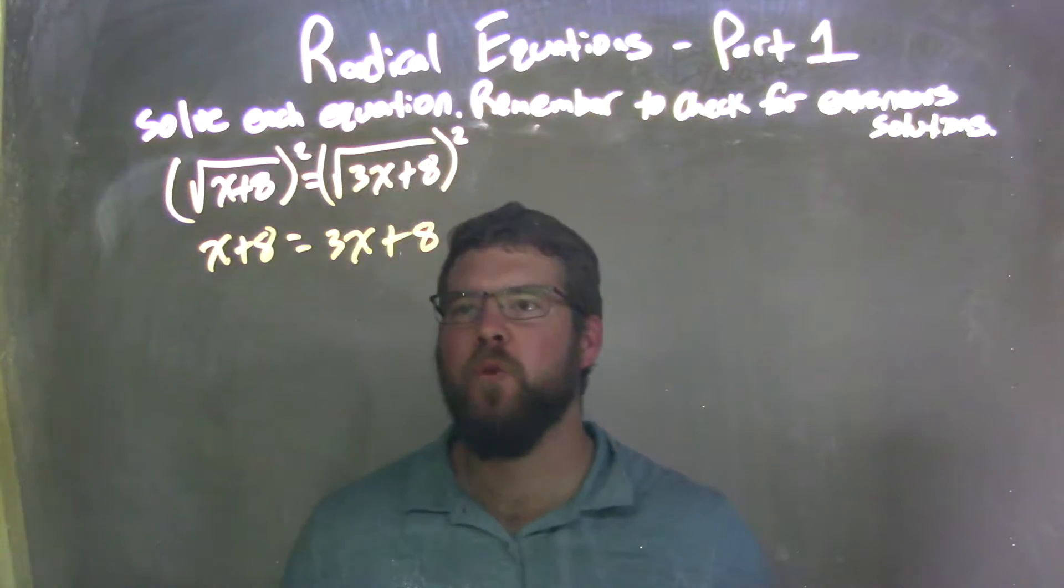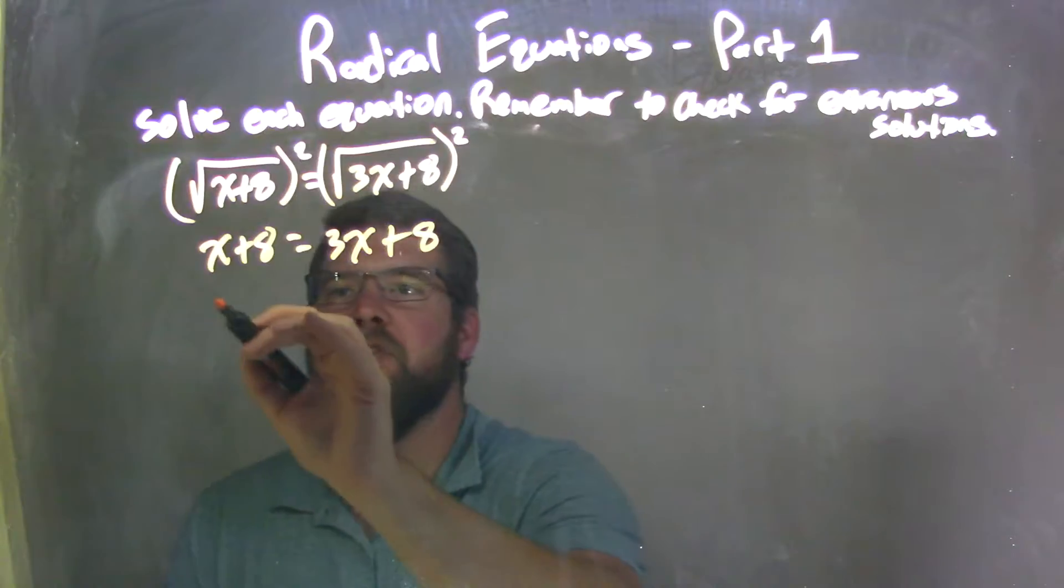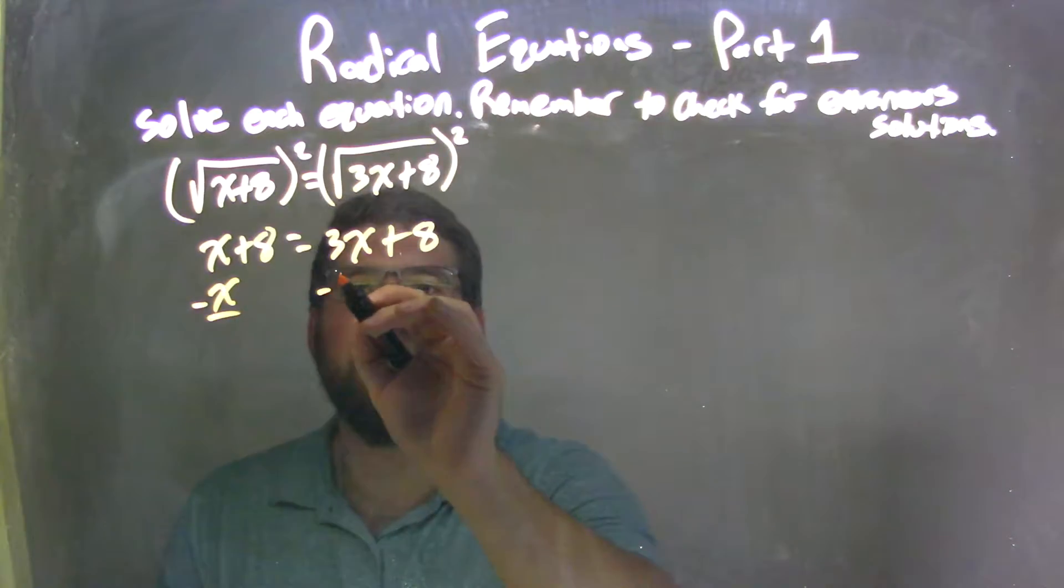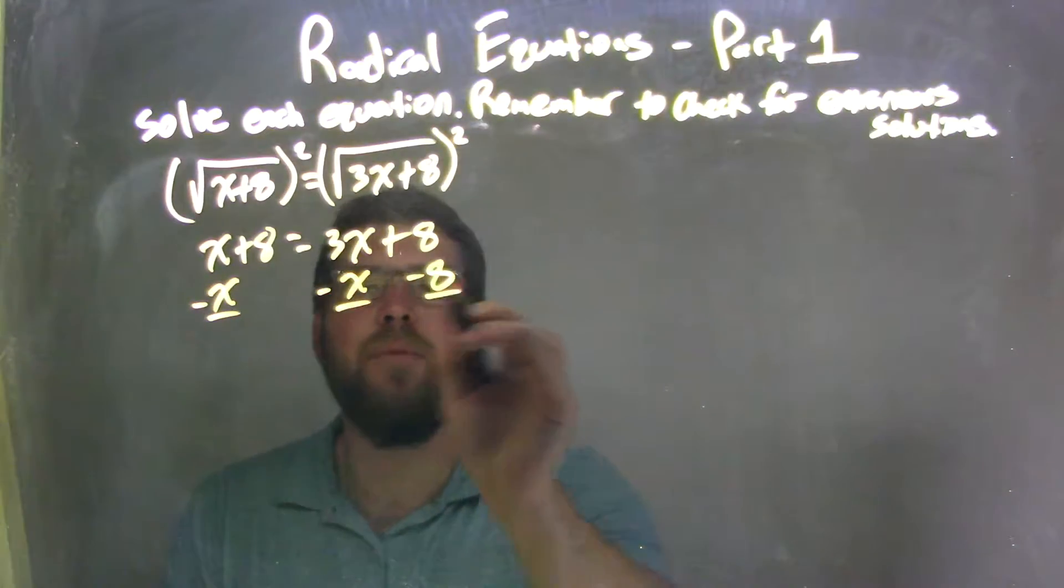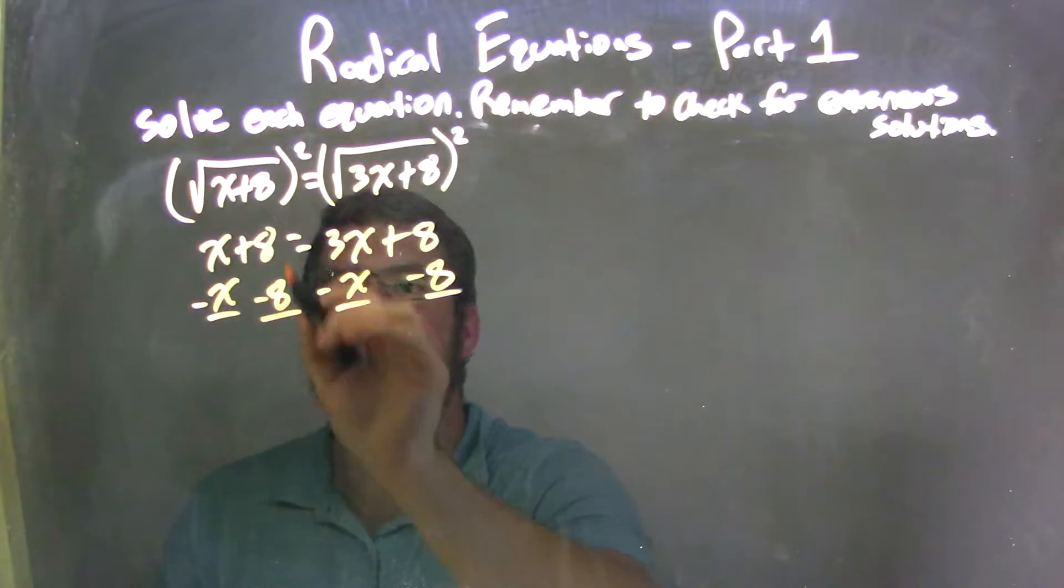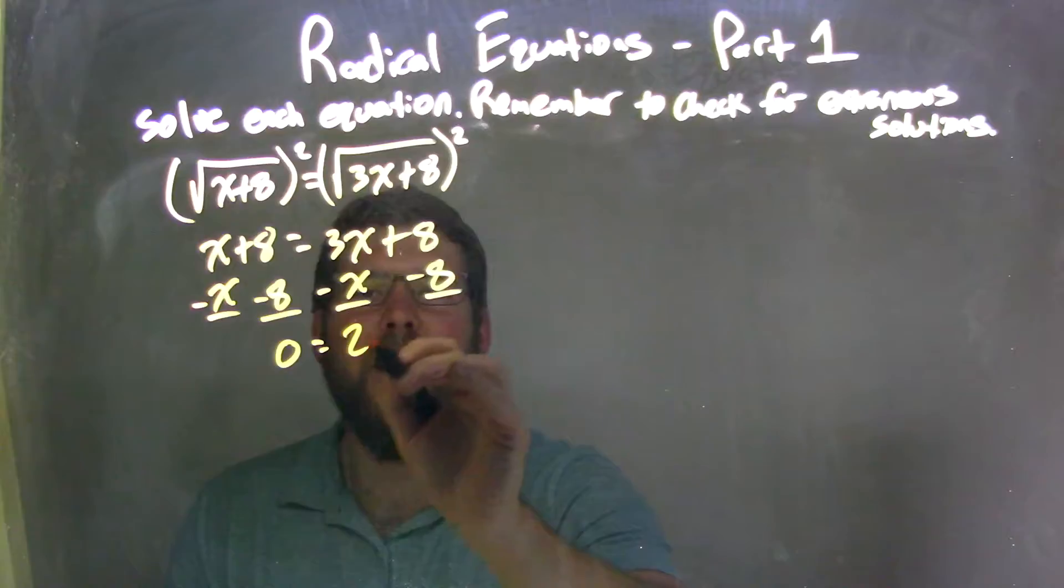Now I'm going to solve for x, so I'm going to row my x's together and my numbers together. So I'm going to subtract an x to both sides, and I'm subtracting 8 to both sides, leaving me with 8 minus 8 being 0 here, and 3x minus x is 2x.